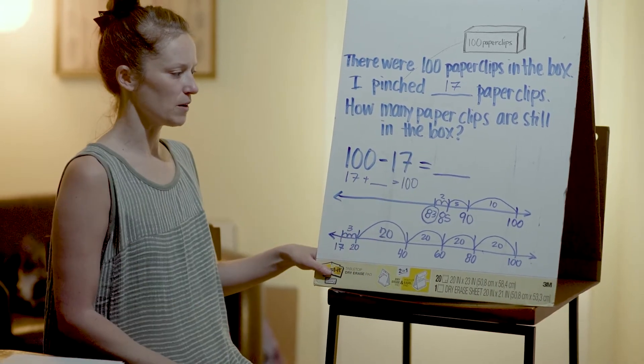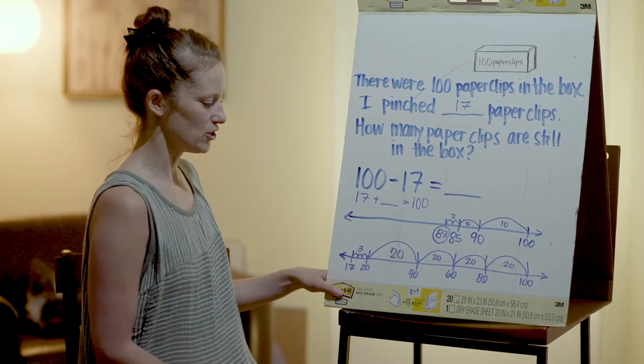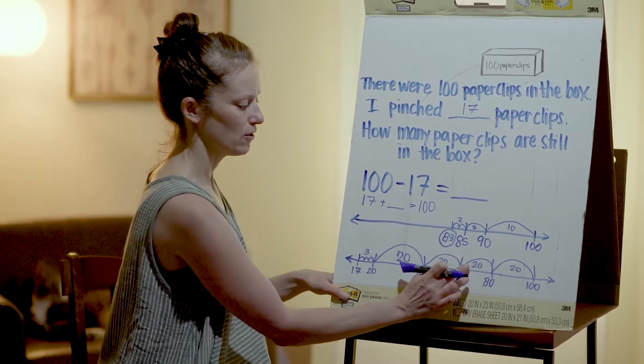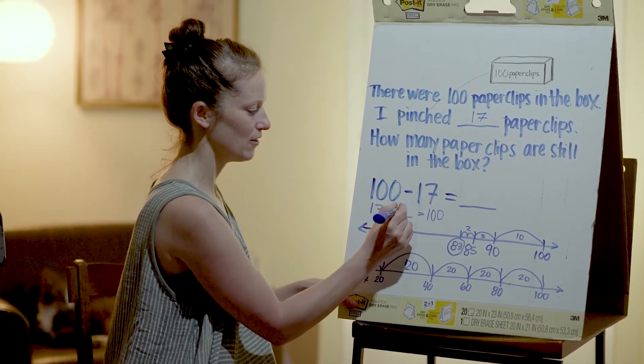So in order to figure out this number that we need, right here, we have to add all these jumps up. So we have 20, 40, 60, 80, 1, 2, 3. And that's 83.